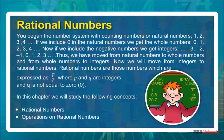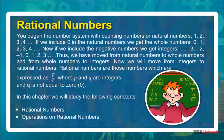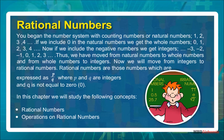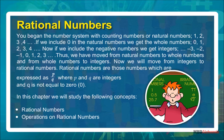We began the number system with counting numbers, or natural numbers: 1, 2, 3, 4, and so on. If we include 0, we get whole numbers: 0, 1, 2, 3, 4, and so on. If we include the negative numbers, we get integers: ..., -3, -2, -1, 0, 1, 2, 3, and so on. Thus we have moved from natural numbers to whole numbers, and from whole numbers to integers.